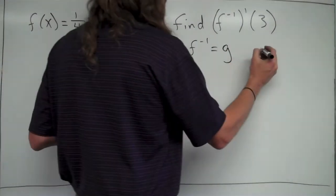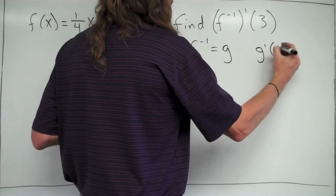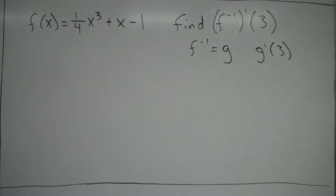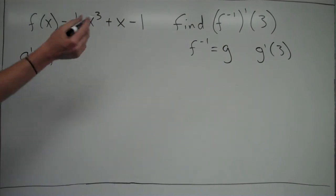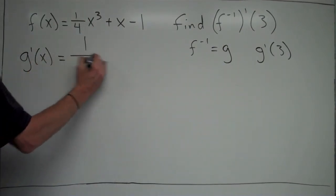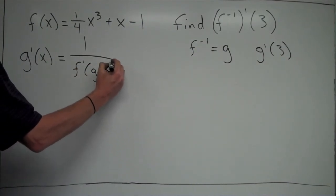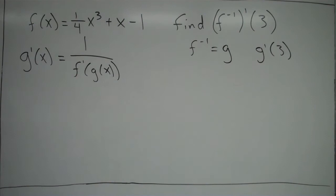So then the problem just becomes finding g prime of 3. It's the same thing, I'm just renaming it. Instead of saying f inverse, I'm just calling f inverse g. Now, in the thing we just talked about, we found that g prime, which we want to find g prime of 3, where g is the inverse of f, was equal to 1 over f prime of g of x.